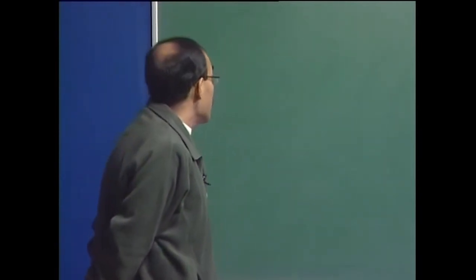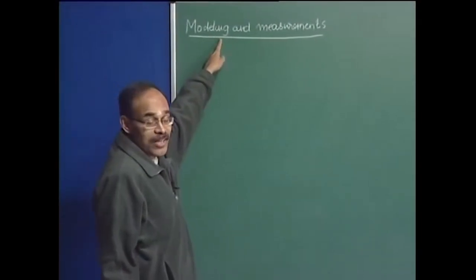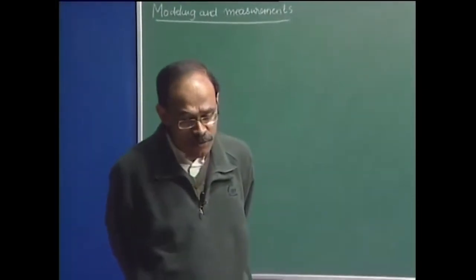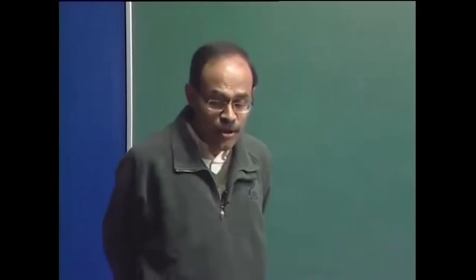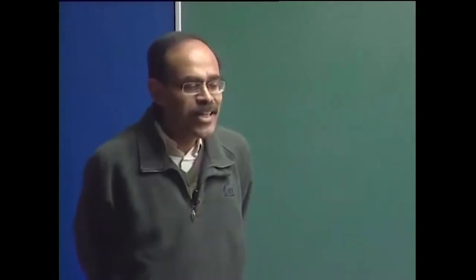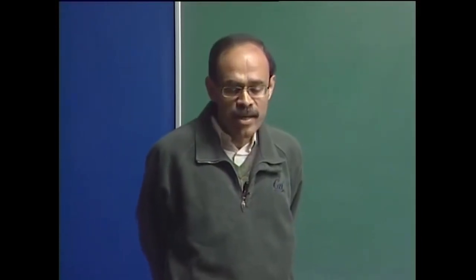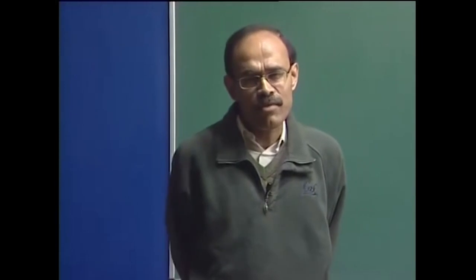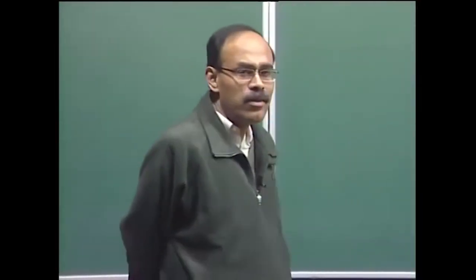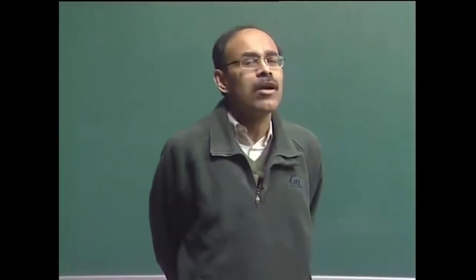We continue our discussion on modeling and measurements. Some people write modeling with one L — this is the American way — while the British way uses double L. What we have seen so far is that following geometric similarity, we consider dynamic similarity, and in the context of metallurgical processing operations, we can consider metallurgical or steel-making processes to be dominated by inertial and gravitational forces in most situations. Therefore, we can get dynamic similarity in steel-making systems on the basis of Froude similarity criteria.